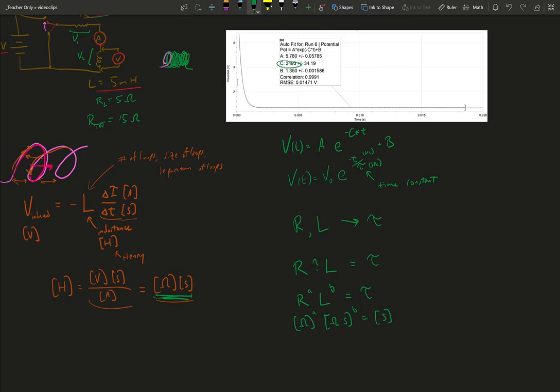Because tau, the time constant, has to have units of seconds. Now, I need an A and a B exponent such that the ohms will cancel out and I'm left with seconds. So if I want seconds and I know this is going to be the first power, that means B has to be 1.